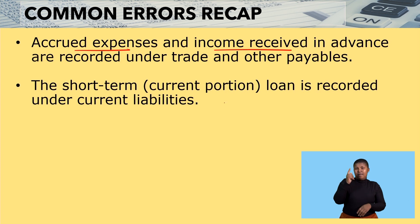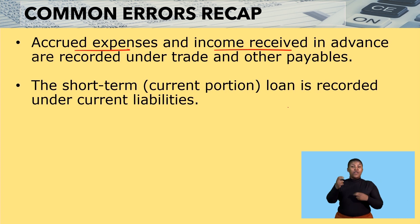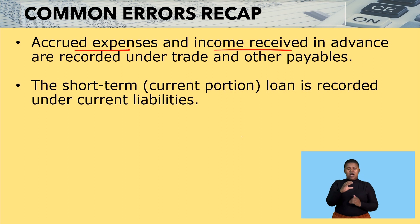The short-term or current portion of a loan is recorded under current liabilities, and the remainder will still remain your non-current liabilities. The portion of the loan that will be paid within the next 12 months therefore becomes your short-term loan — that is the current portion of loan.